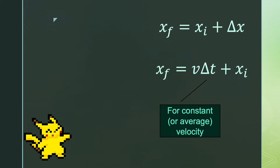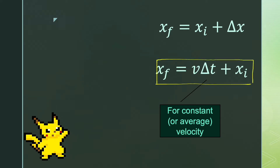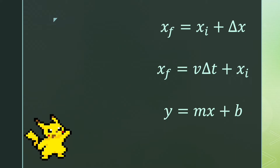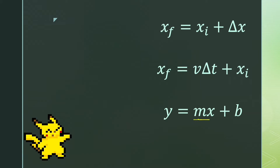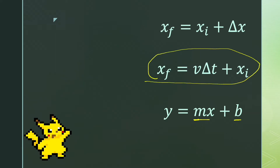Now I'm going to compare this equation. This is a physics equation: final position equals velocity times time plus initial position. From math, we have y equals mx plus b — slope-intercept form — which has the slope m and the y-intercept. It turns out this physics equation is actually in slope-intercept form.